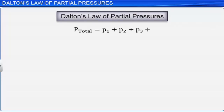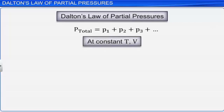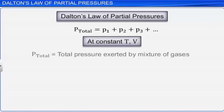Where P total is the total pressure exerted by the mixture of gases, and P1, P2, P3, etc. are the partial pressures of individual gases 1, 2, and 3 respectively.